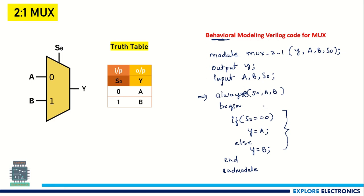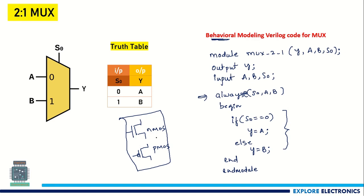These are the three modeling styles in Verilog, and we have implemented the 2-to-1 multiplexer using all three. A fourth style, switch level, can also be written but requires knowledge of NMOS and PMOS gates and how they construct the circuit. So we will not go into switch level now and will stick to these three modeling styles. Thank you.